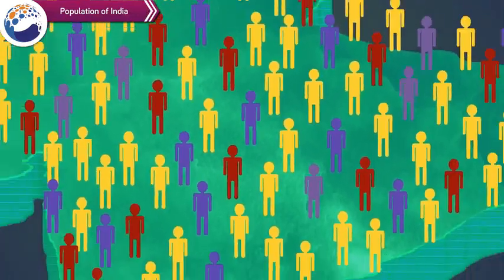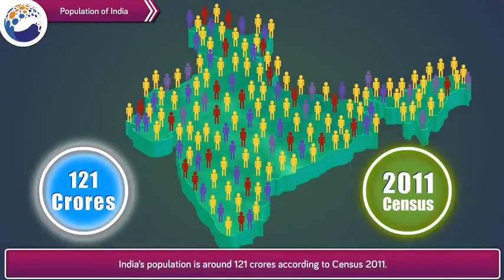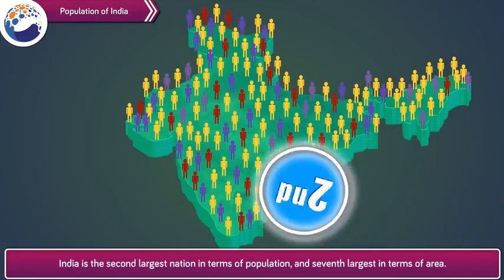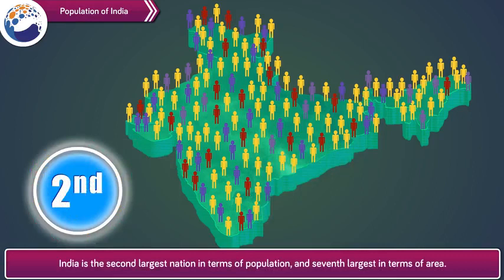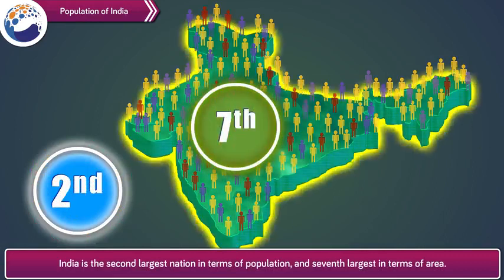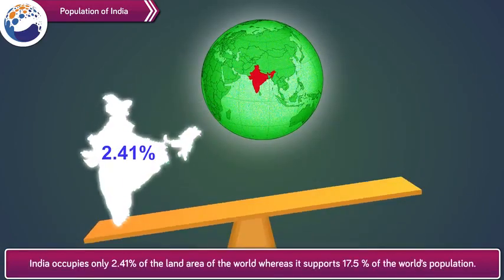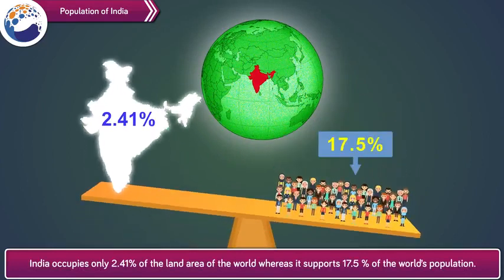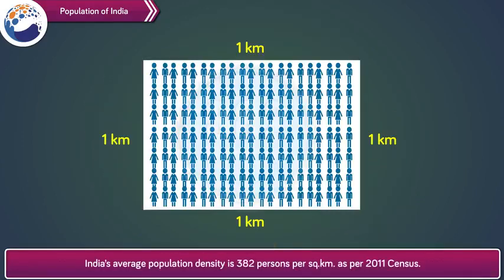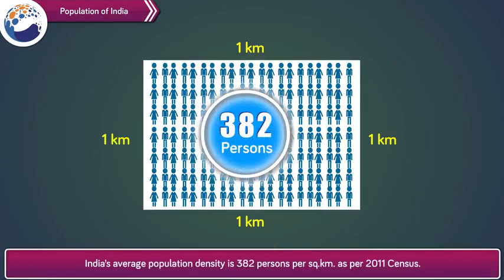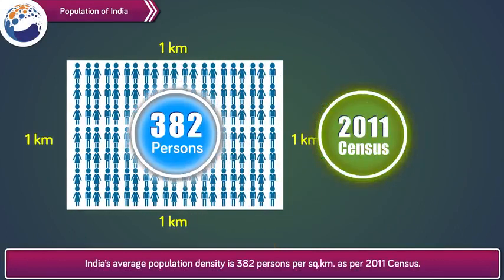Population of India: India's population is around 121 crores according to Census 2011. India is the second largest nation in terms of population and seventh largest in terms of area. India occupies only 2.41% of the land area whereas it supports 17.5% of the world's population. India's average population density is 382 persons per square kilometer as per 2011 Census.